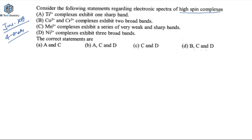There are four statements. Statement A says that titanium in the +3 oxidation state complexes exhibit one sharp band. Statement B says that cobalt in +2 and chromium in +3 oxidation state complexes exhibit two broad bands. Statement C says that manganese in +2 oxidation state complexes exhibit a series of weak and sharp bands. Statement D says that nickel in +2 oxidation state complexes exhibit three broad bands. So the focus is on the number of bands and whether the transition is sharp or broad.